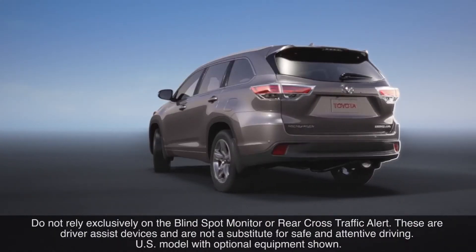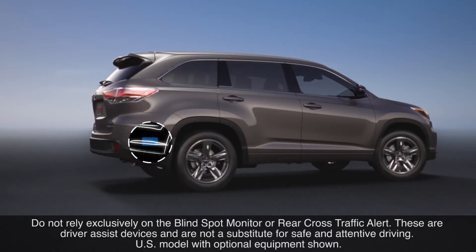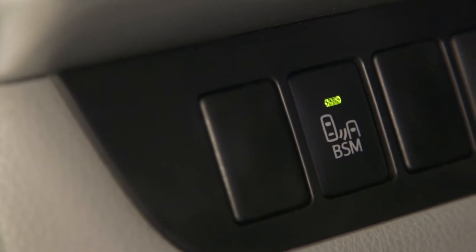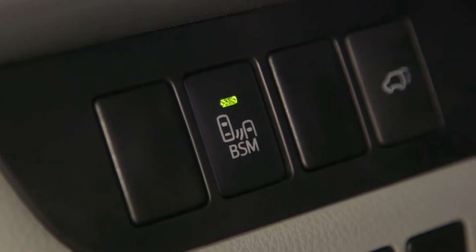Both use the same radar sensors located inside the left and right sides of the rear bumper to help detect vehicles within their monitored areas. Both features can be turned on or off using a common switch labeled BSM on the instrument panel.